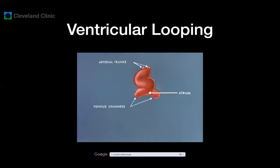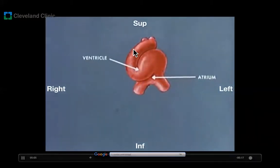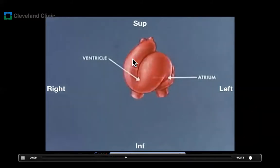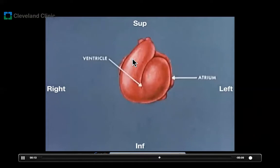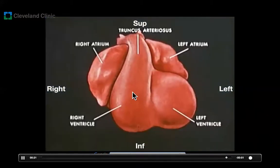Second letter: ventricular looping. I'll run this short video to explain the process of ventricular looping. This is the primitive cardiac tube, where blood flows from the venous channels at the bottom all the way up to the arterial trunks on top. As the cardiac tube grows rapidly, it loops to one side or the other to accommodate the extra cardiac mass. Most of the time, this primitive cardiac tube loops to the right side, so at the end of this process the morphologic right ventricle is located on the right side of the morphologic left ventricle.